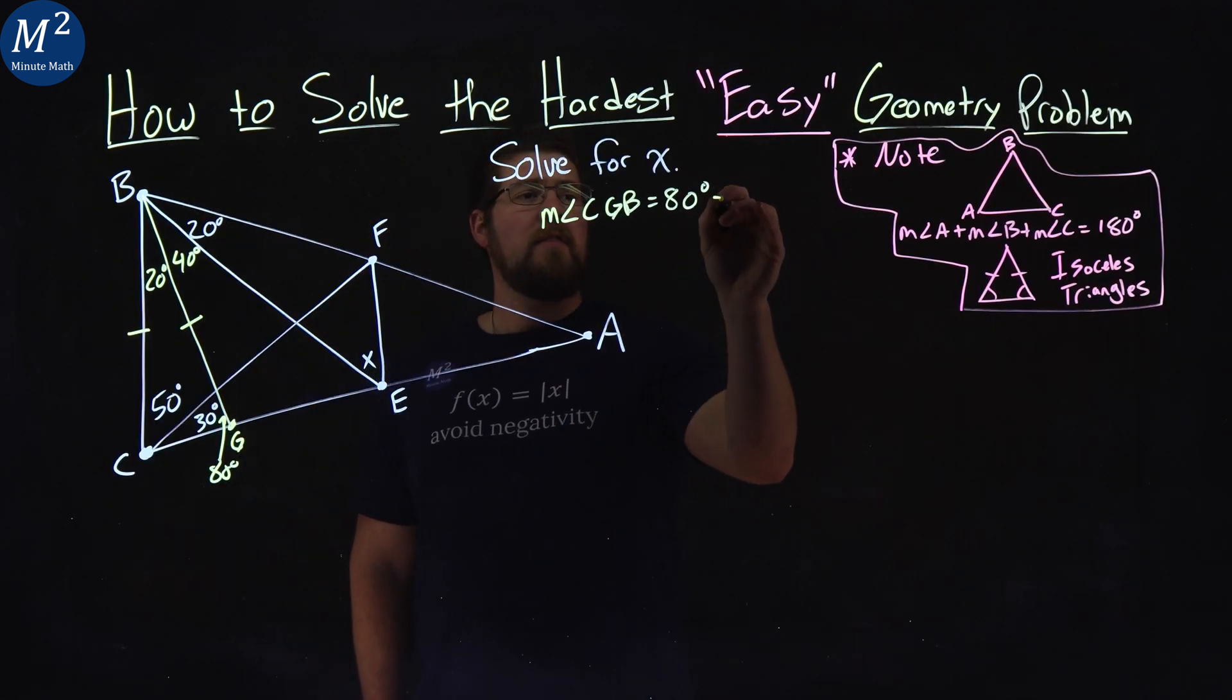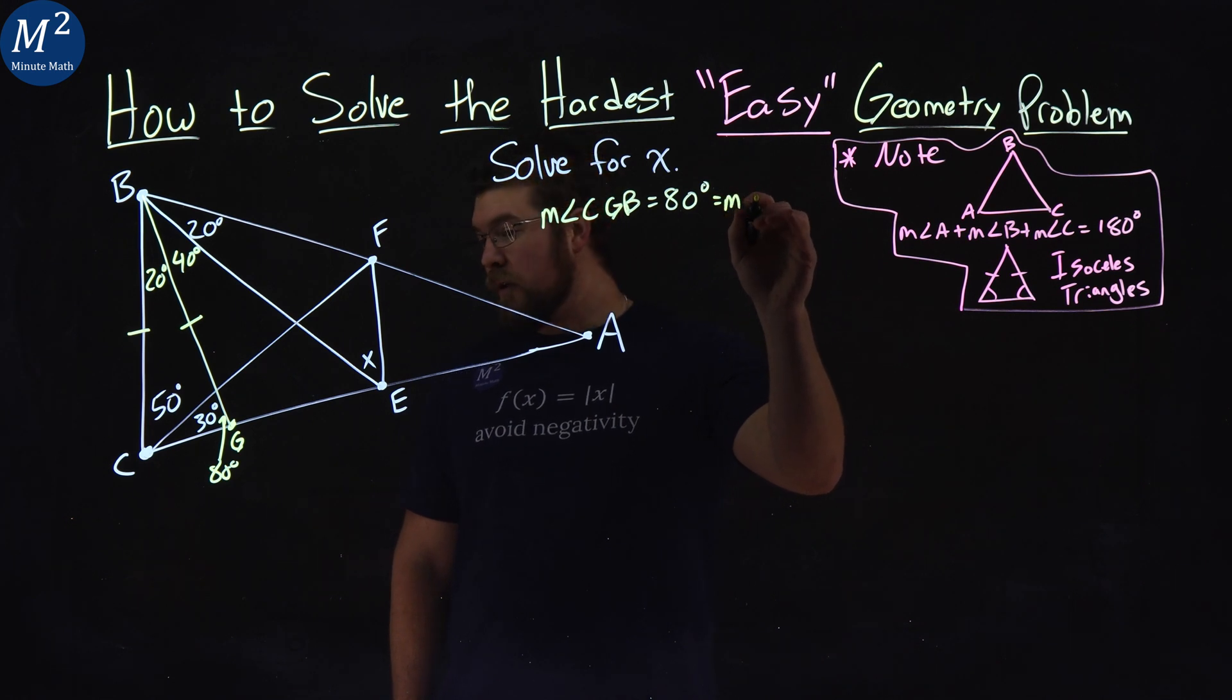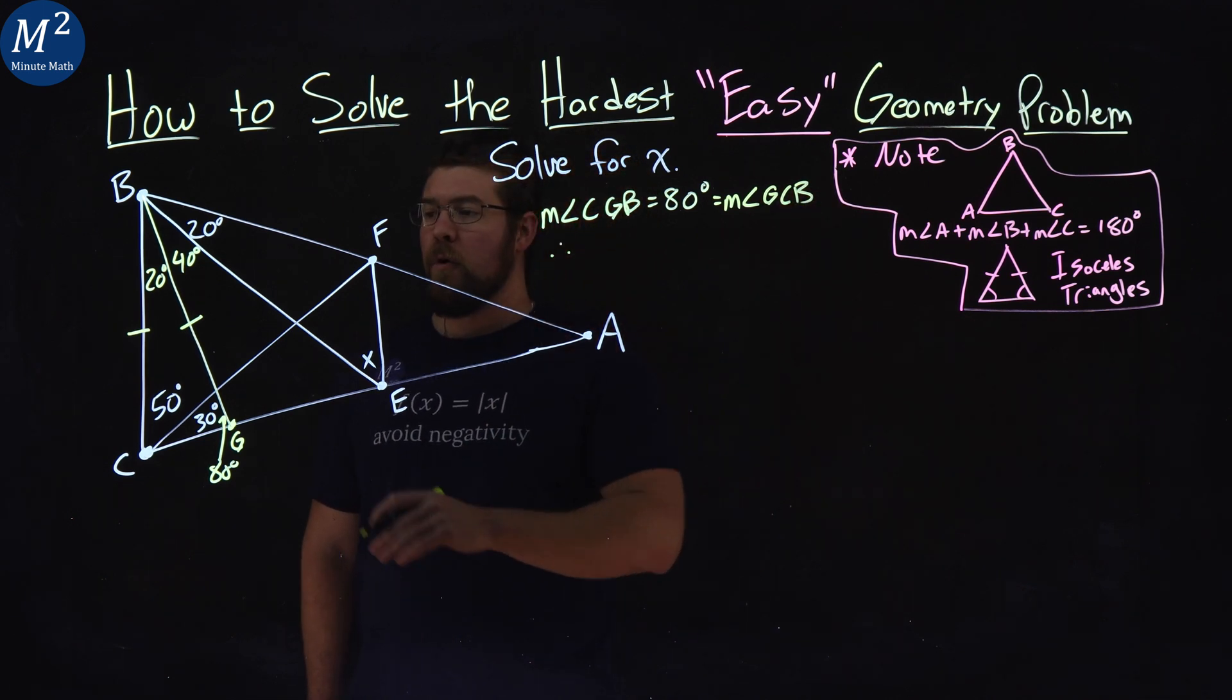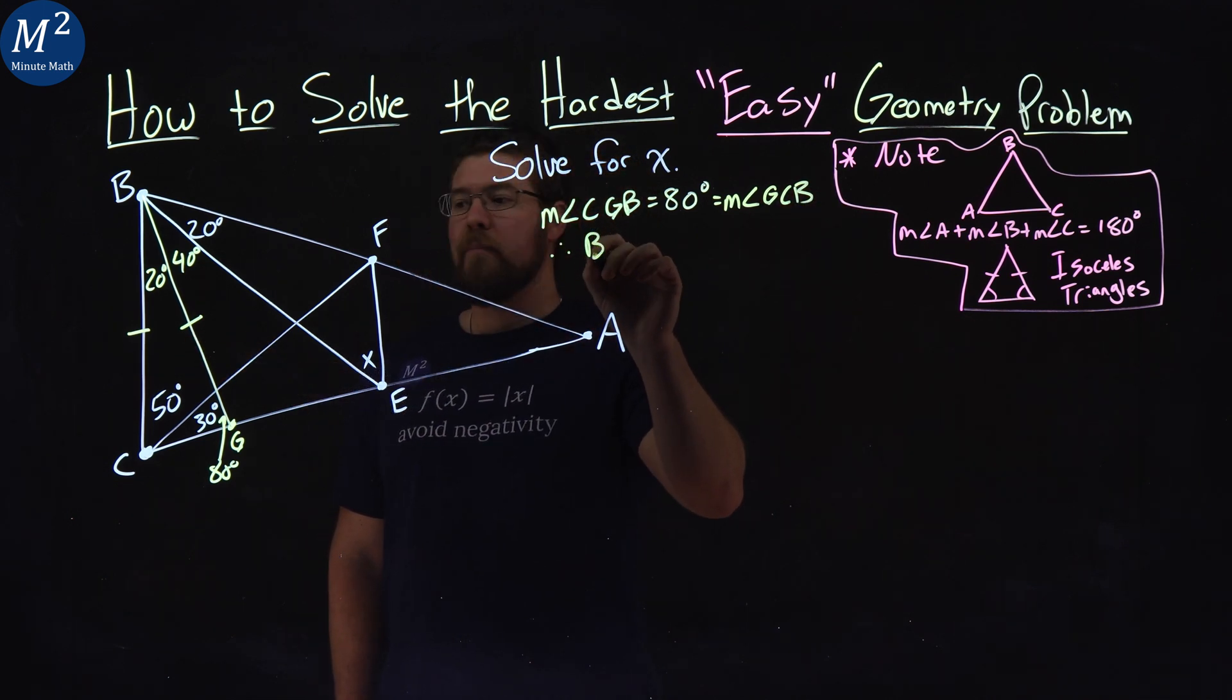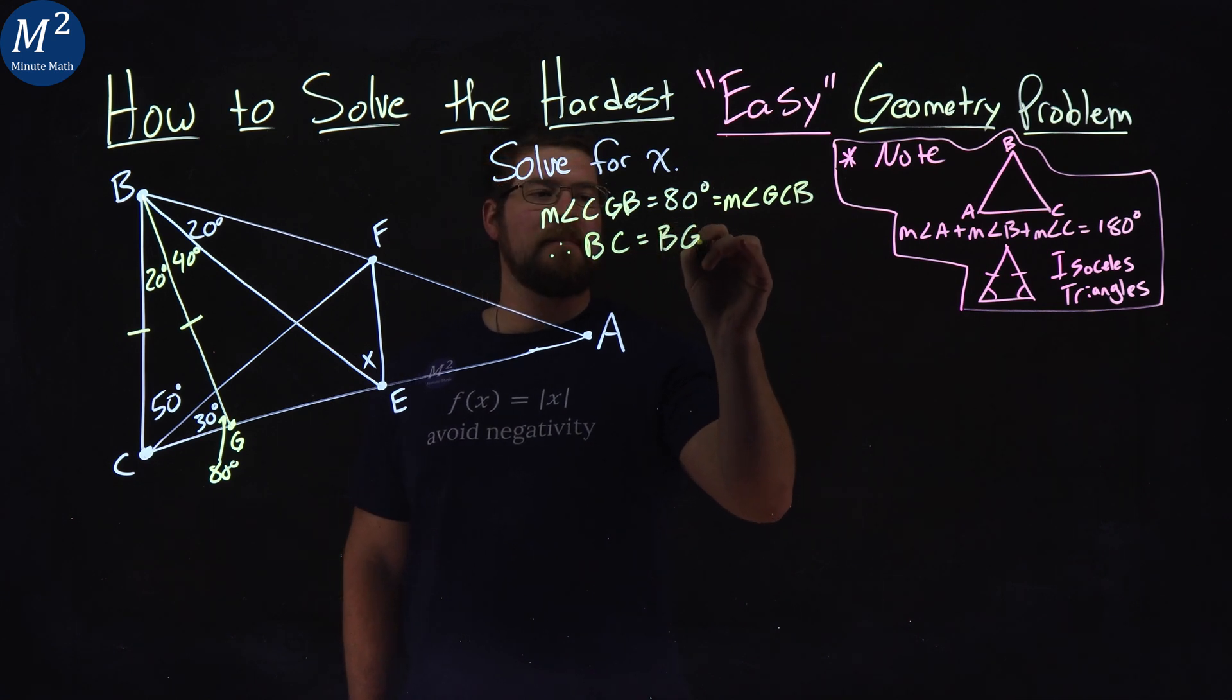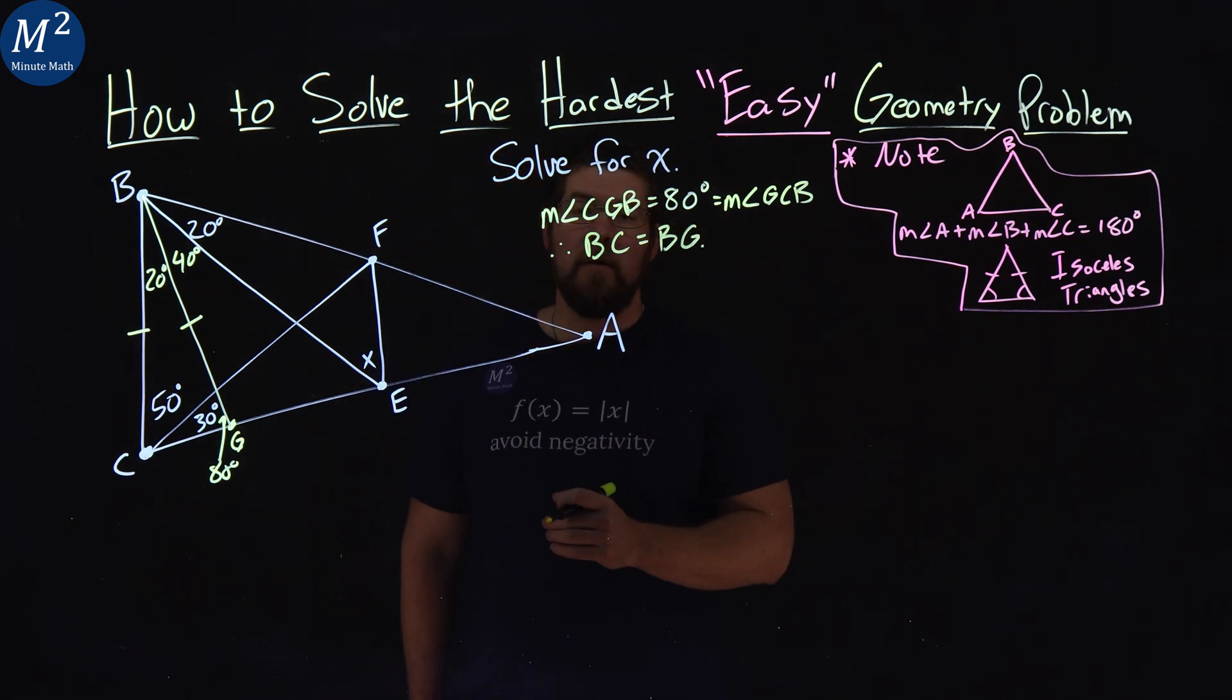So that equals that 80 degrees is equal to the measurement of angle GCB, and like I said, therefore those lines are congruent, BC is equal to BG. And this is going to be a common theme throughout this problem.